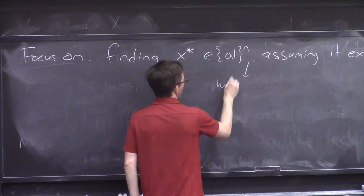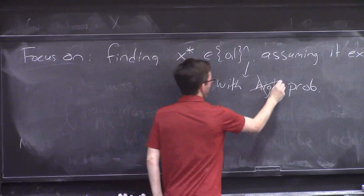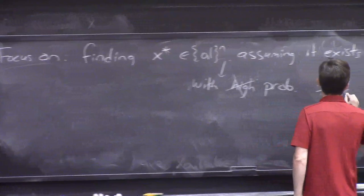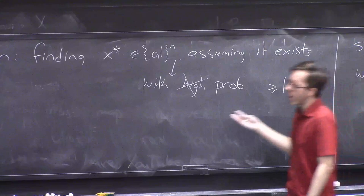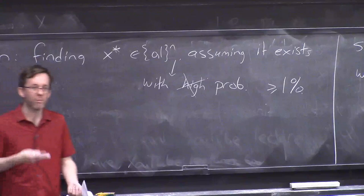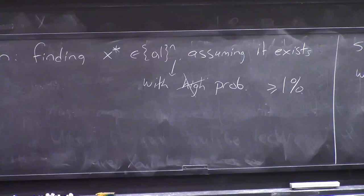We're going to find it with high probability — actually, we'll find it with not-low probability, like probability at least 1%. This is fine, because if you have an algorithm that finds x-star with probability at least 1%, you can just run it 100 or 500 times. For every string it potentially outputs, you check whether that's the string that makes the circuit output 1. By running it a constant number of times — like 100 or 200 times — you can raise this 1% up to a really high probability.